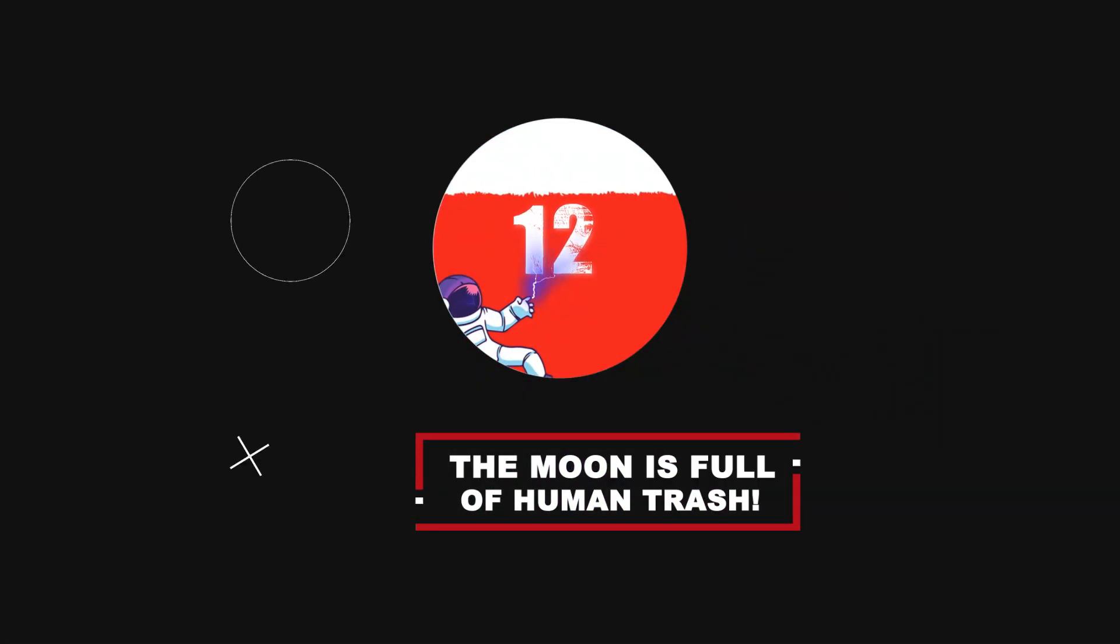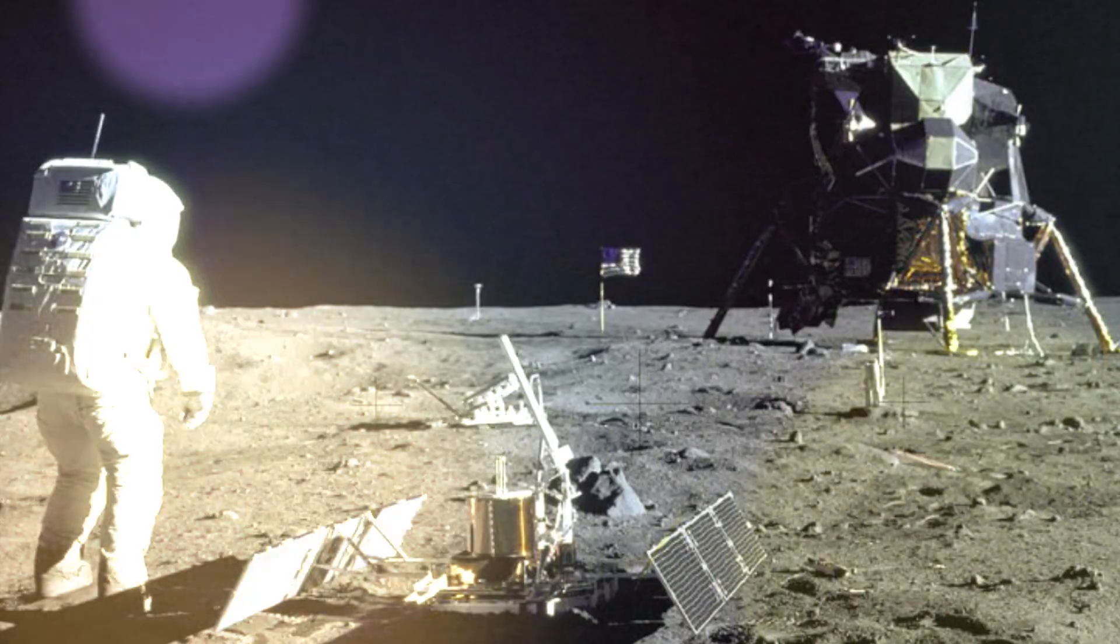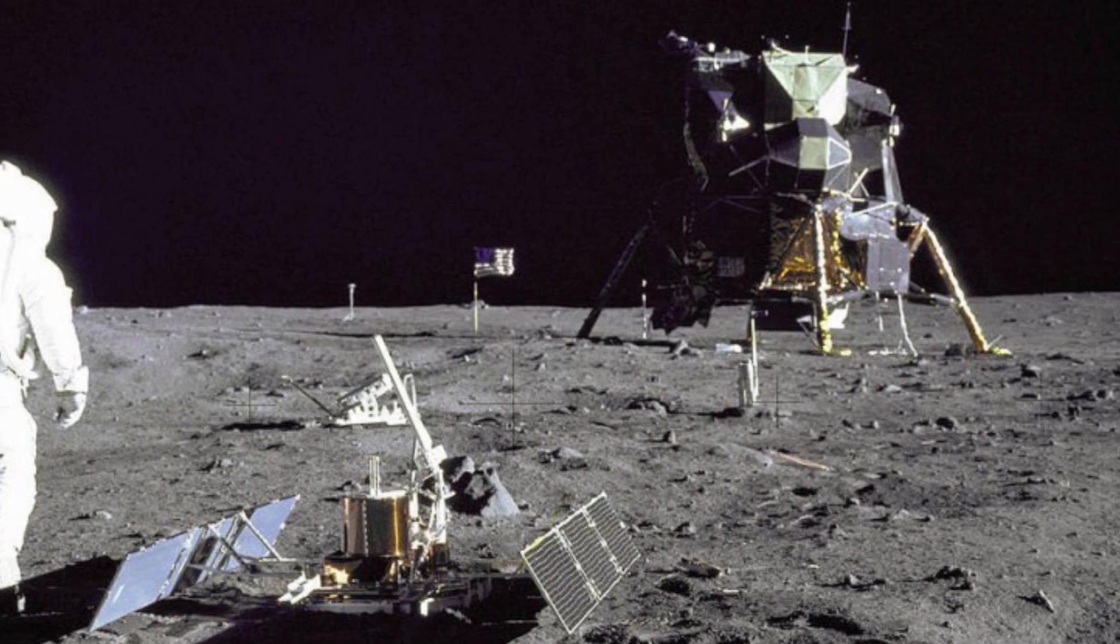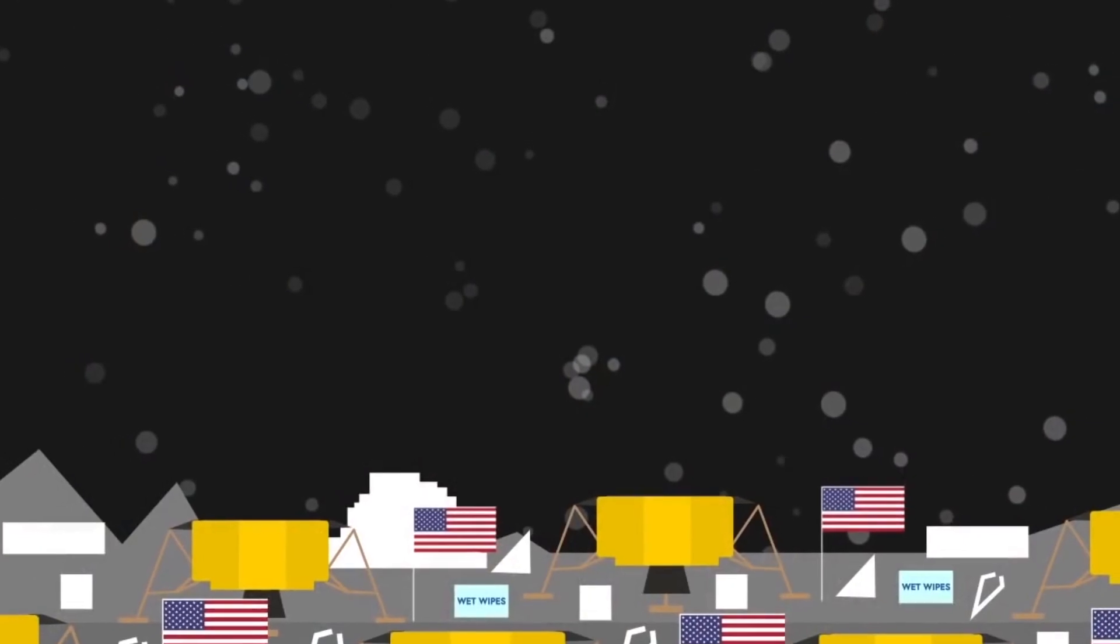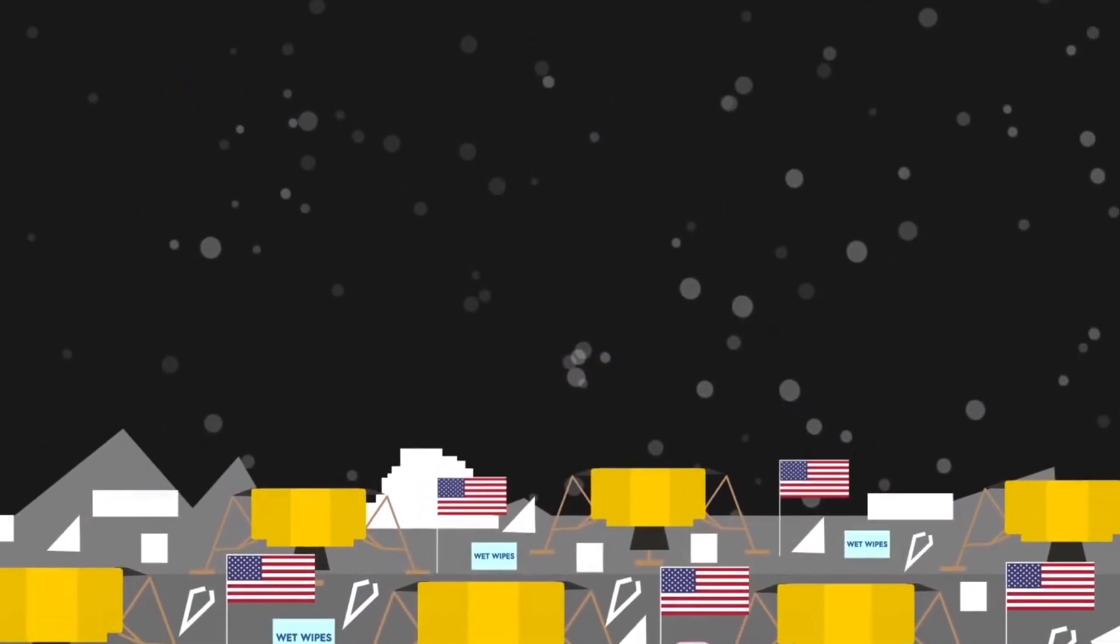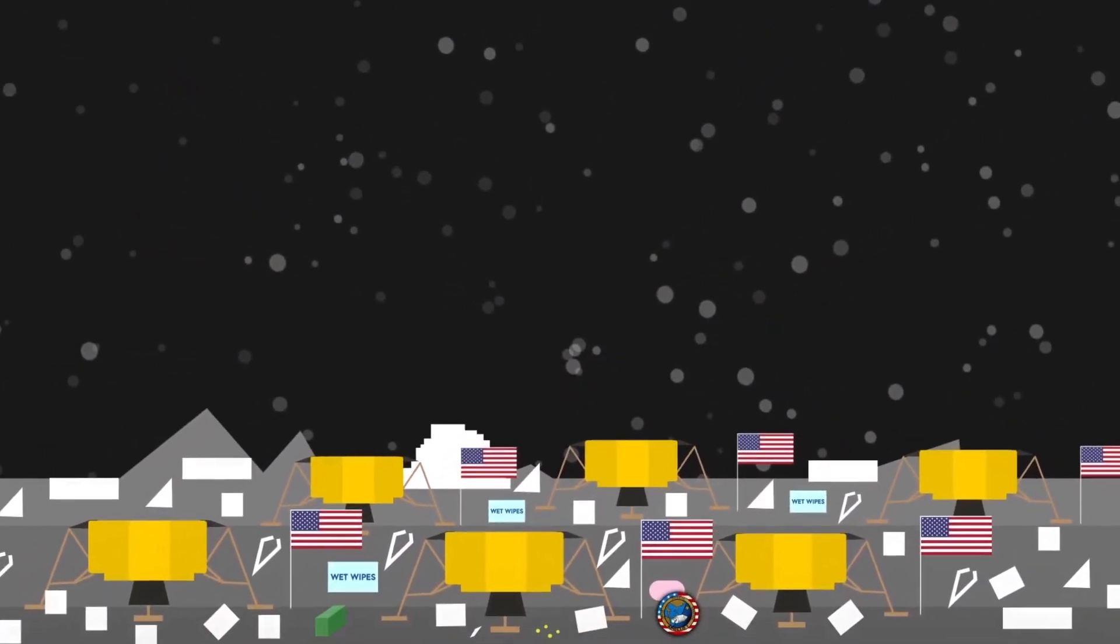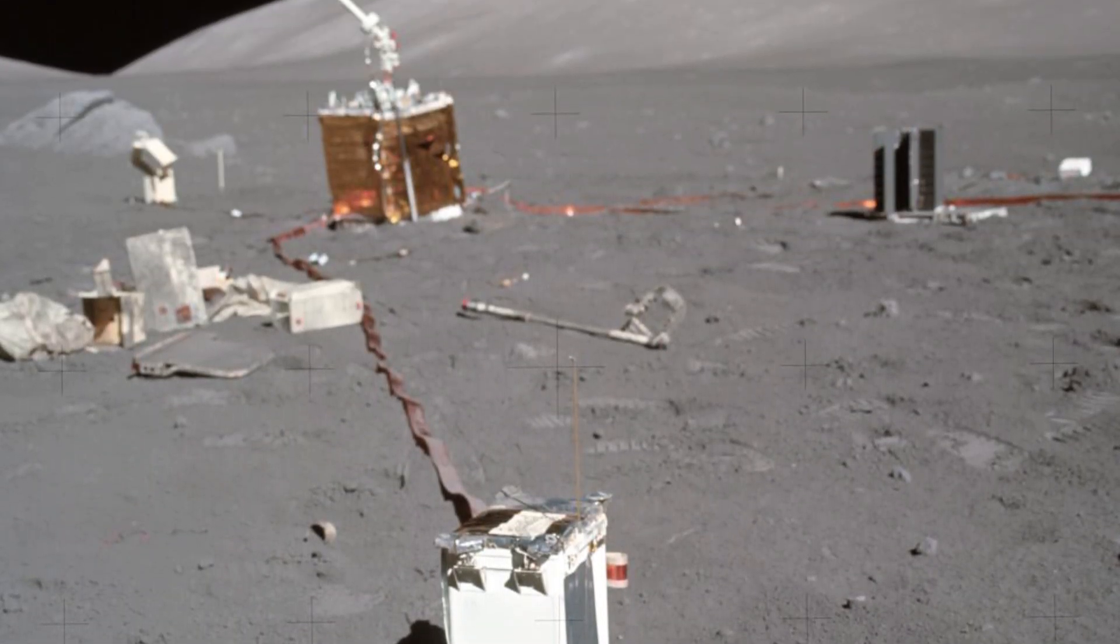The Moon is full of human trash. There is certainly a lot of trash left on the Moon from all those space missions. In all, there are around 400,000 pounds of man-made material thrown on the lunar surface.